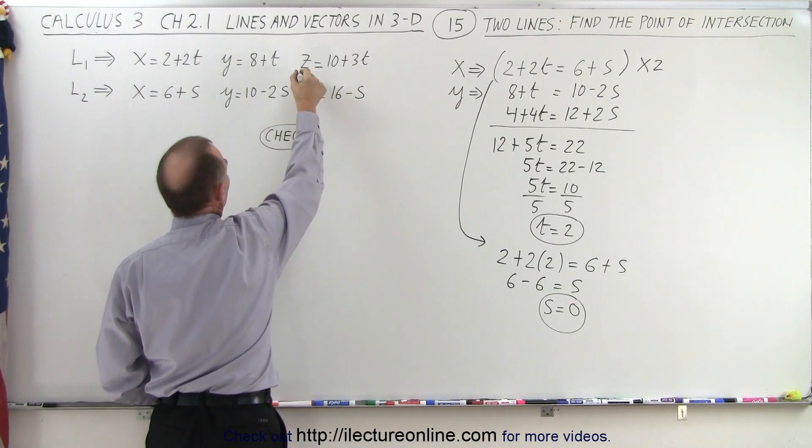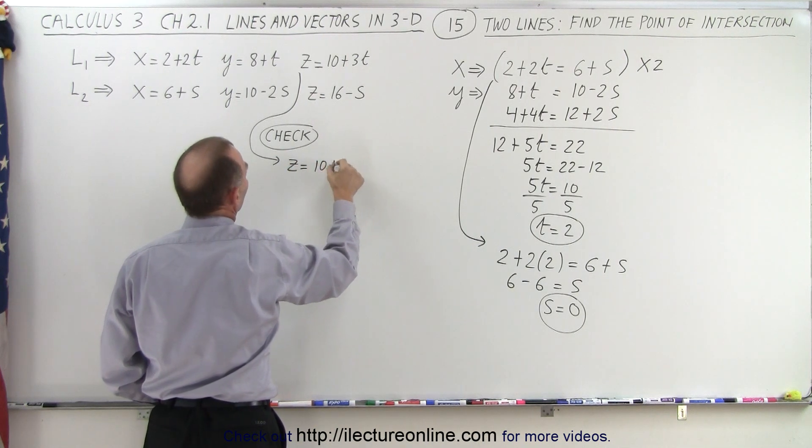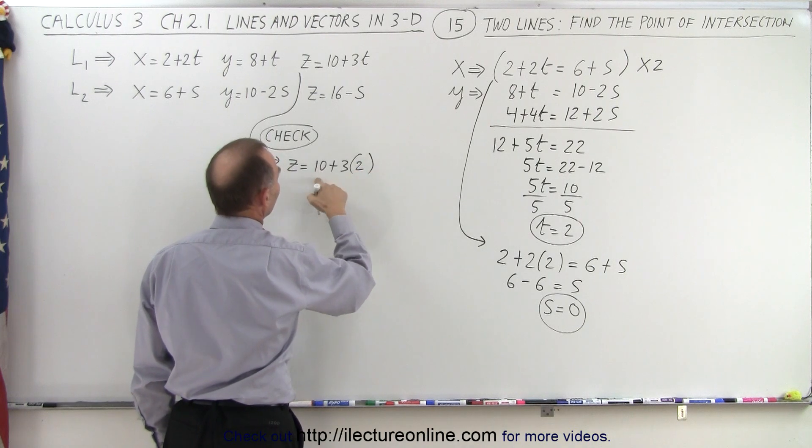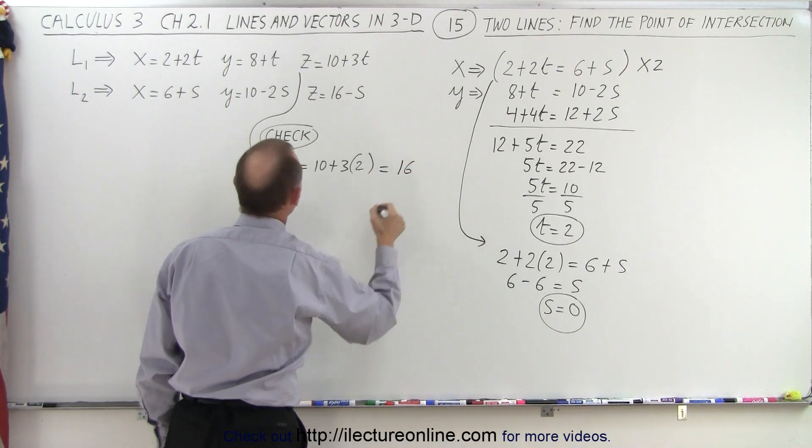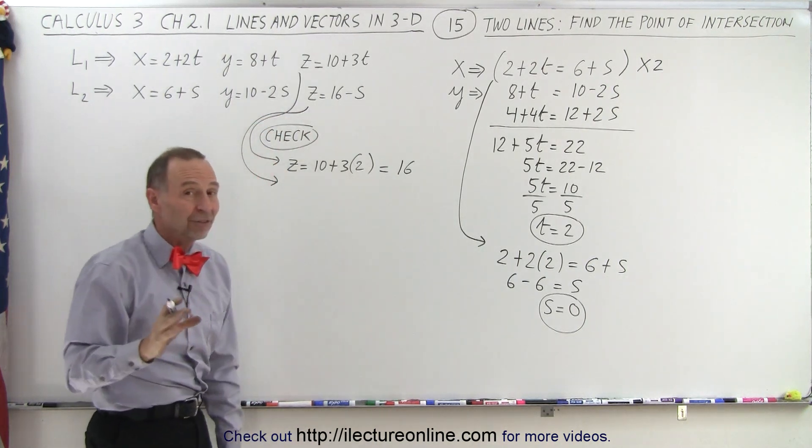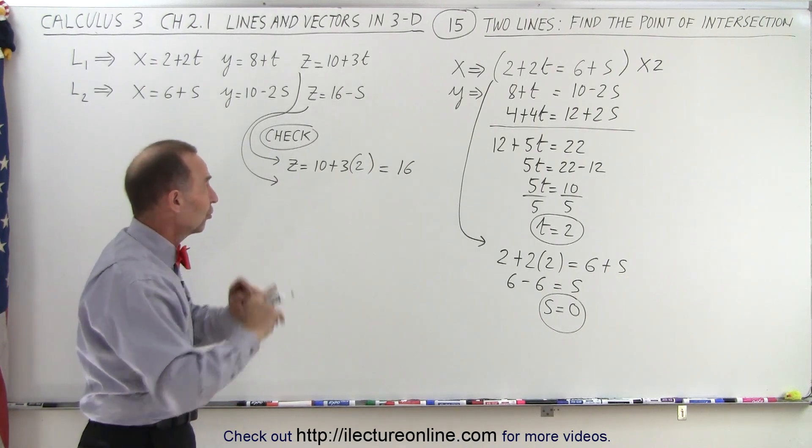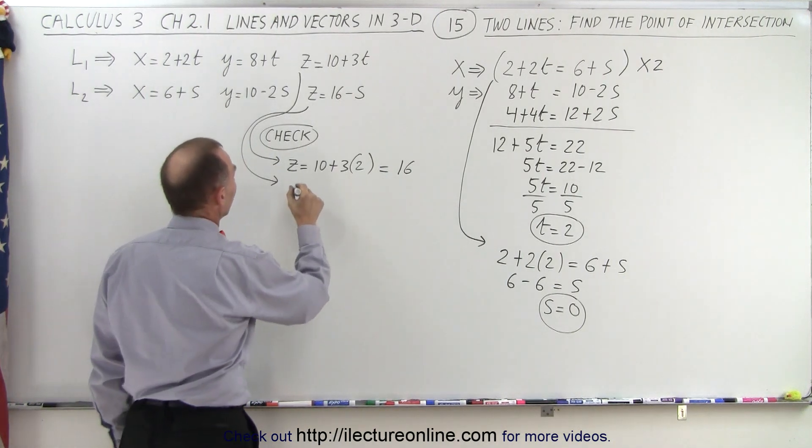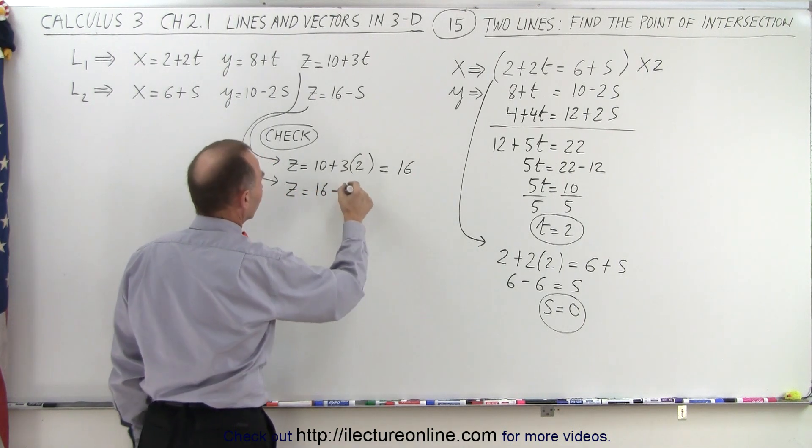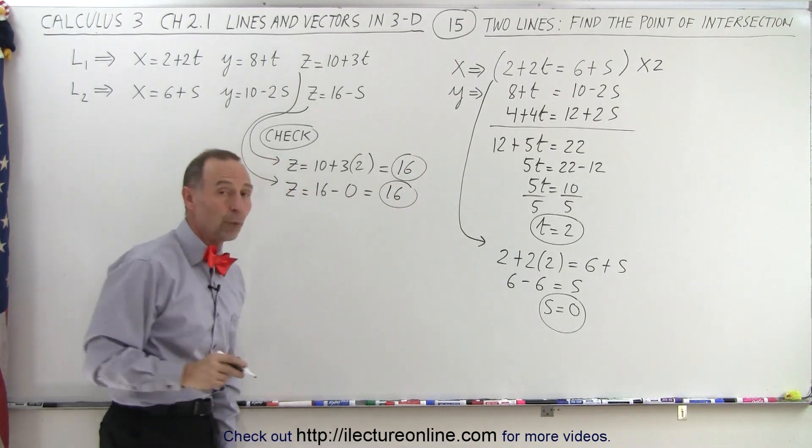To check, we're going to take our first equation and solve for z. So z is equal to 10 plus 3 times t, and t is of course 2, that's 10 plus 6, which is equal to 16. And now we do the same for the second equation, and they better have the same value, because if they don't, that means they do not cross, there is no single point where the two lines meet. So z is equal to 16 minus s, and s is equal to 0, which is 16. And notice I have the very same value for z.